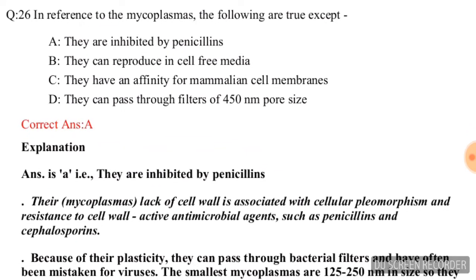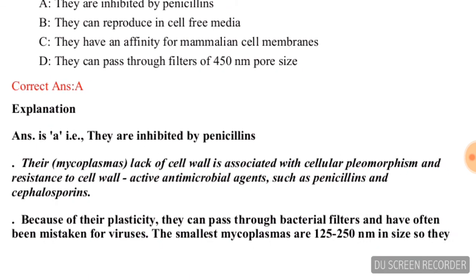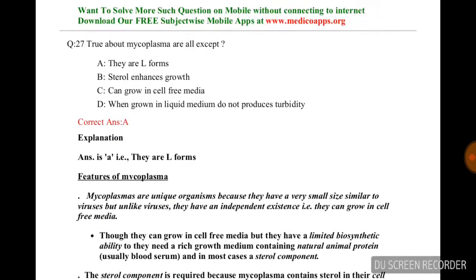Next question: in reference to mycoplasma, the following are true except — A) they are inhibited by penicillin, B) they can reproduce in cell-free media, C) they have an affinity for mammalian cell membranes, D) they can pass through filters of 450 nm pore size. The correct answer is A — they are inhibited by penicillin — this is false.